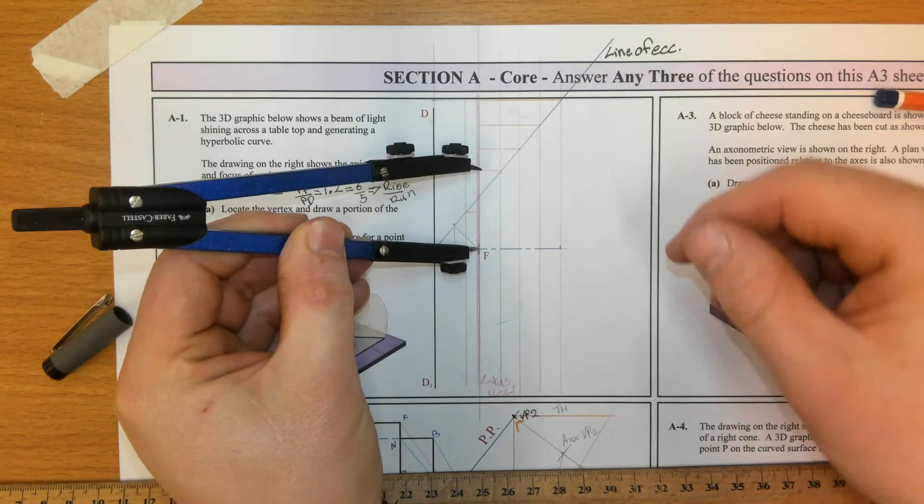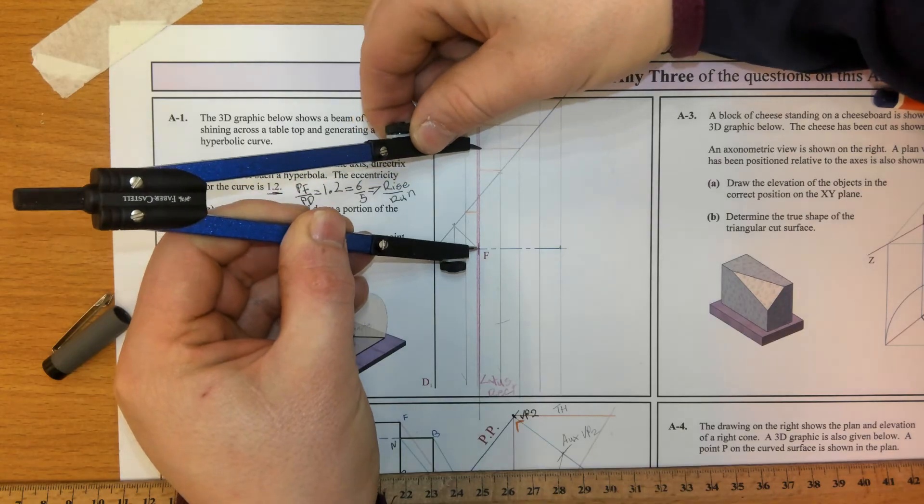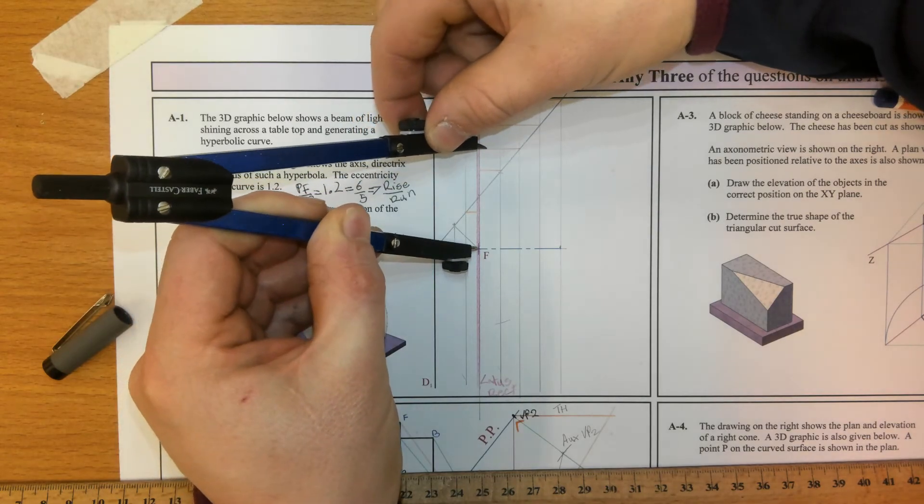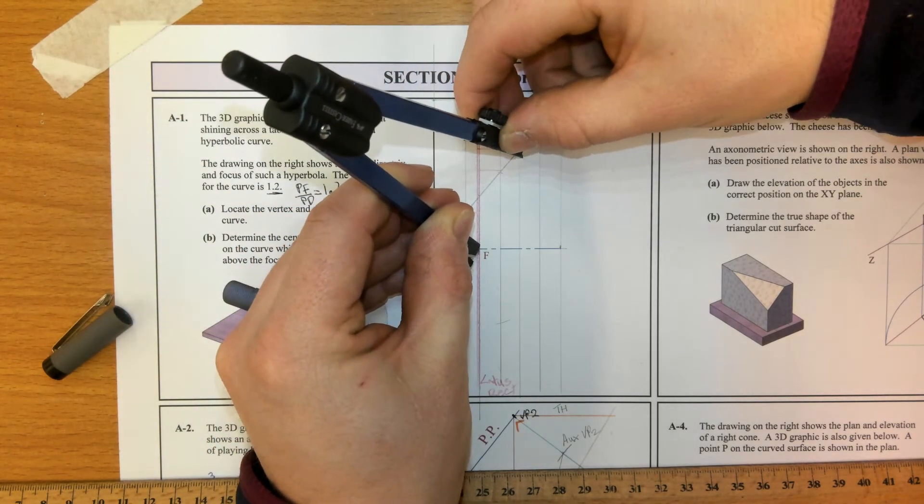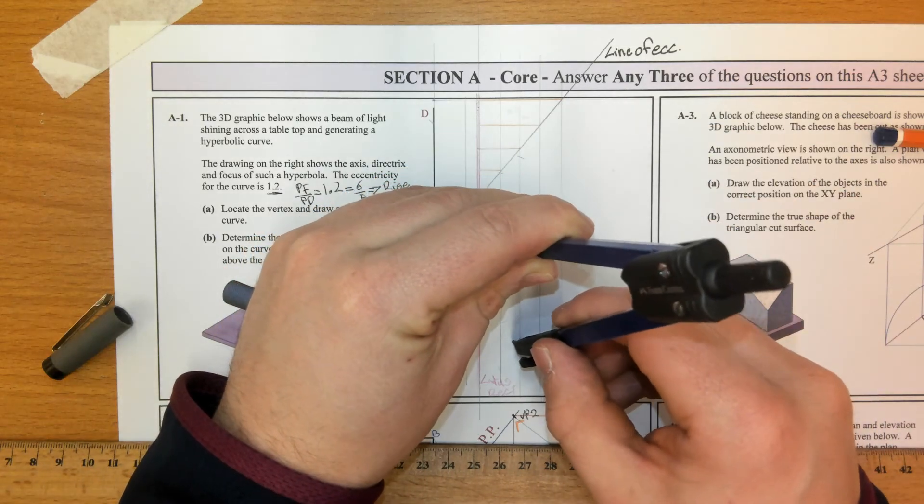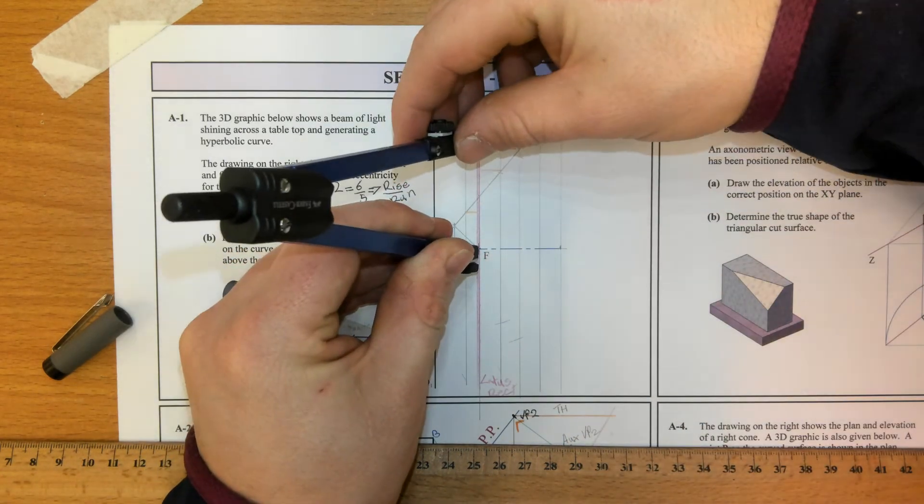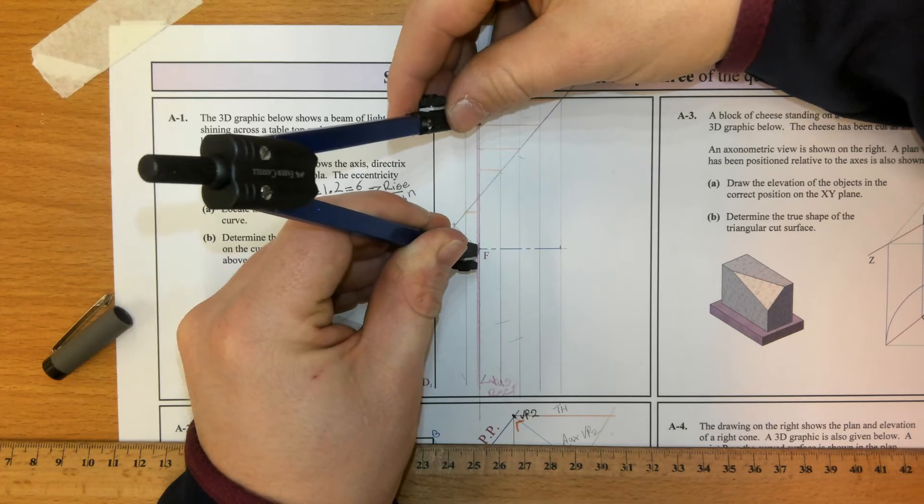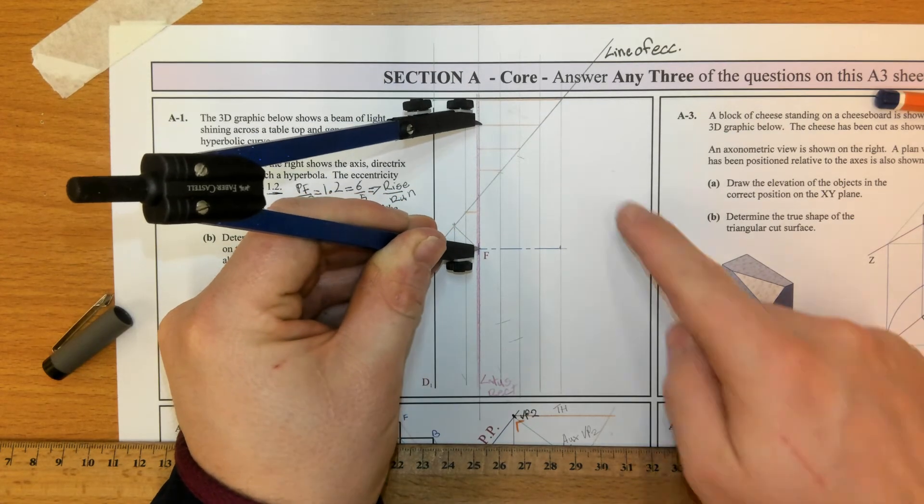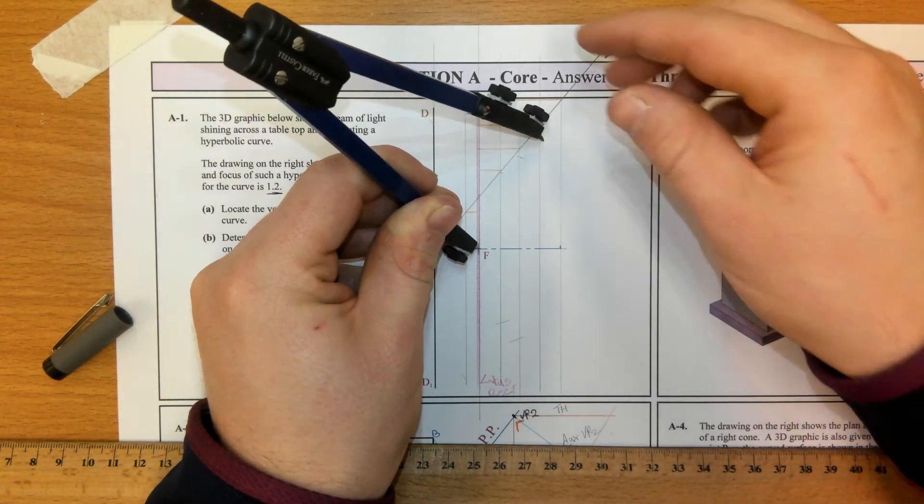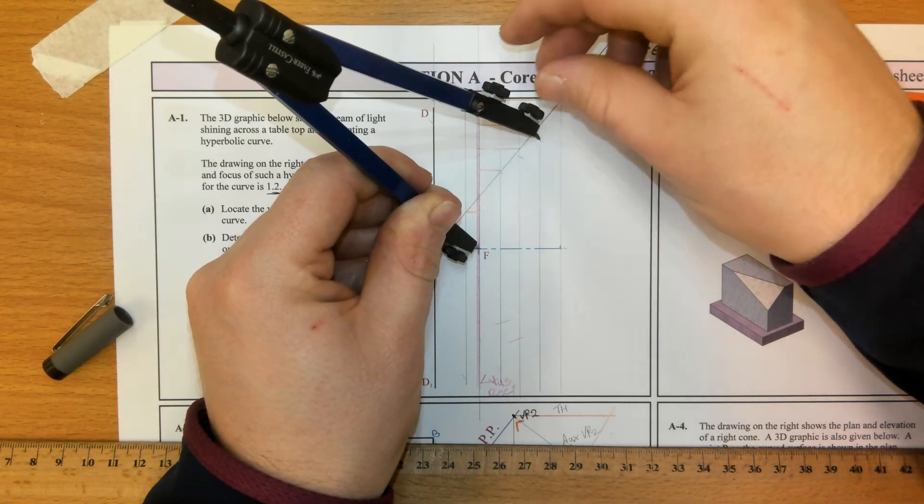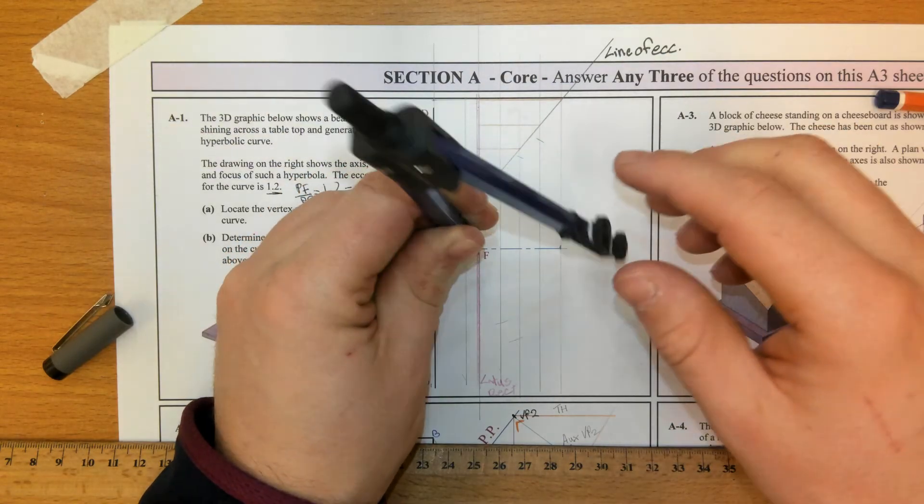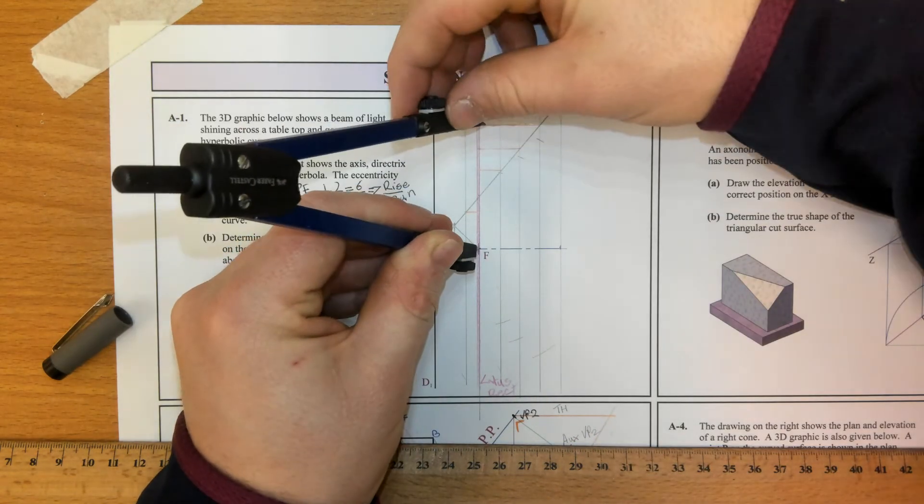To the next one, I'm going to extend my compass until where the orange meets the pink and swing it back to the line it originated from. Next one. Compass to where the orange meets the pink on the line of eccentricity and swing it back to the ordinates it originated from.